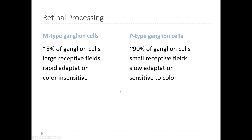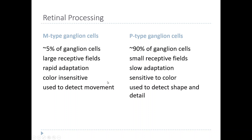M-type ganglion cells are only connected to color-insensitive photoreceptors and do not have different responses to different wavelengths, whereas P-type ganglion cells are responsive to different wavelengths, meaning they get a lot more input from cones.